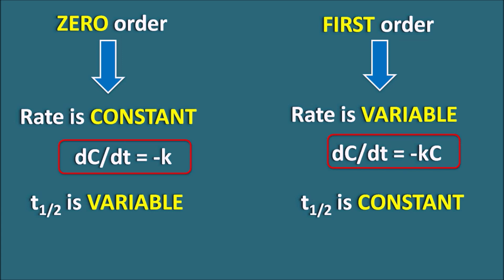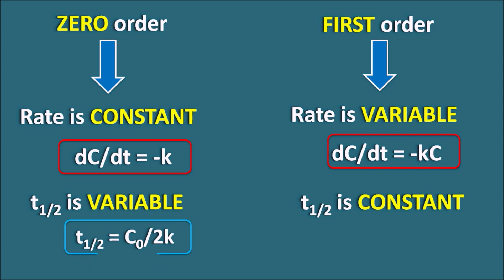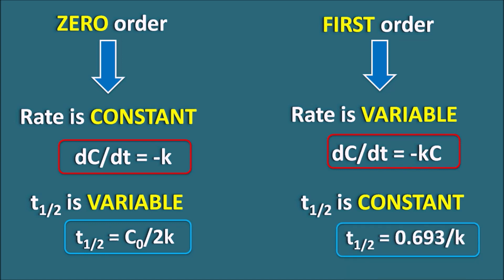In zero order, t-half equals C-naught divided by 2k, so half-life is directly proportional to the initial concentration and is variable. But in first order, t-half equals 0.693 divided by k. Here there is no concentration term in the equation, so half-life is independent of concentration and depends only on the rate constant — it remains constant.